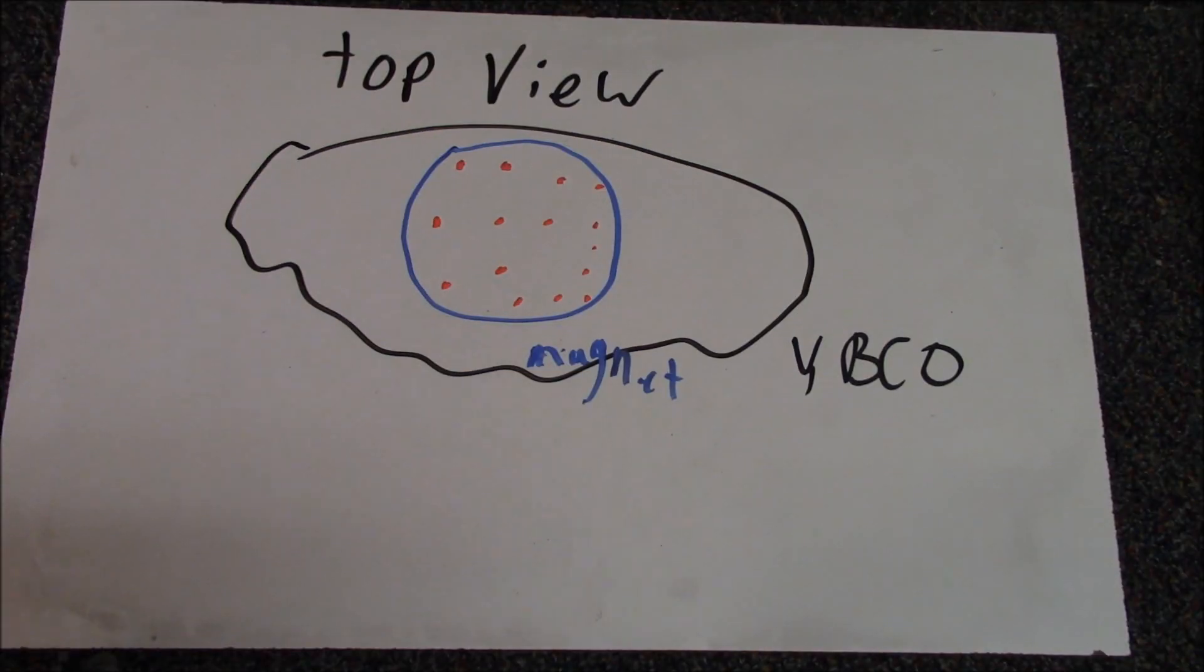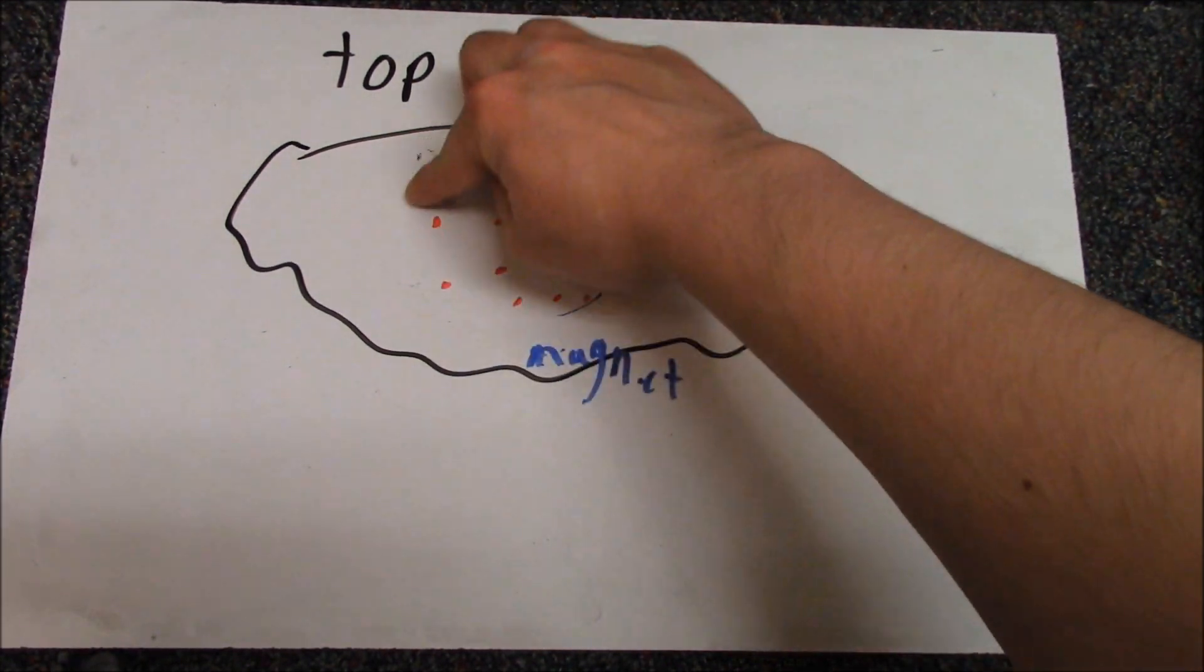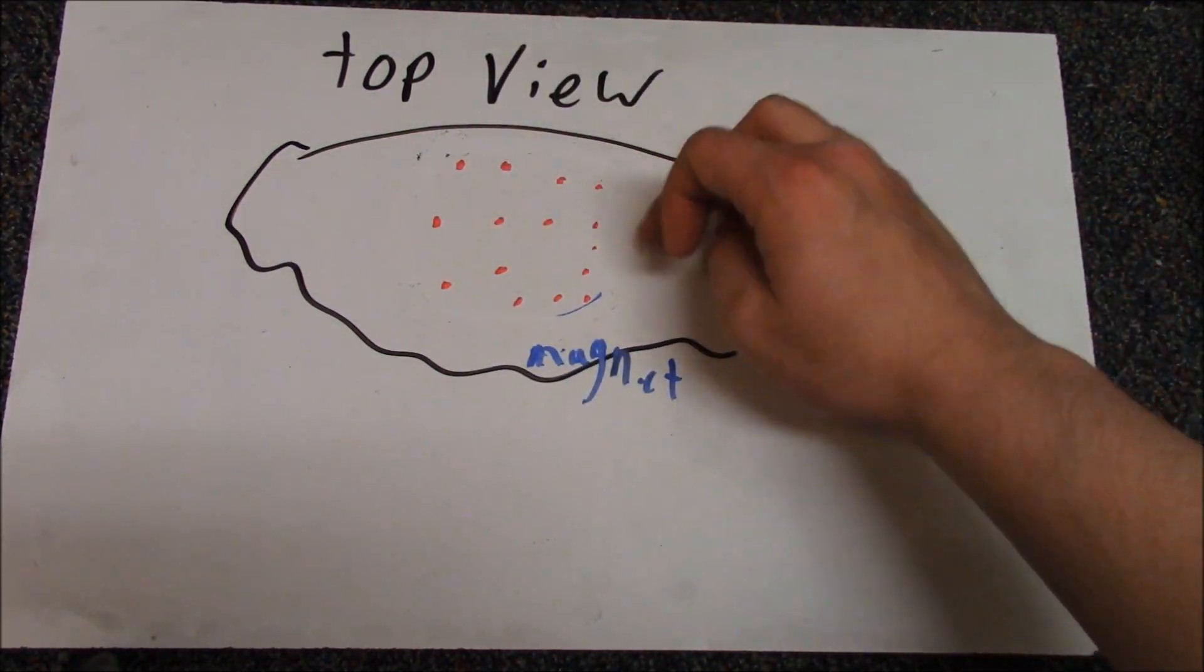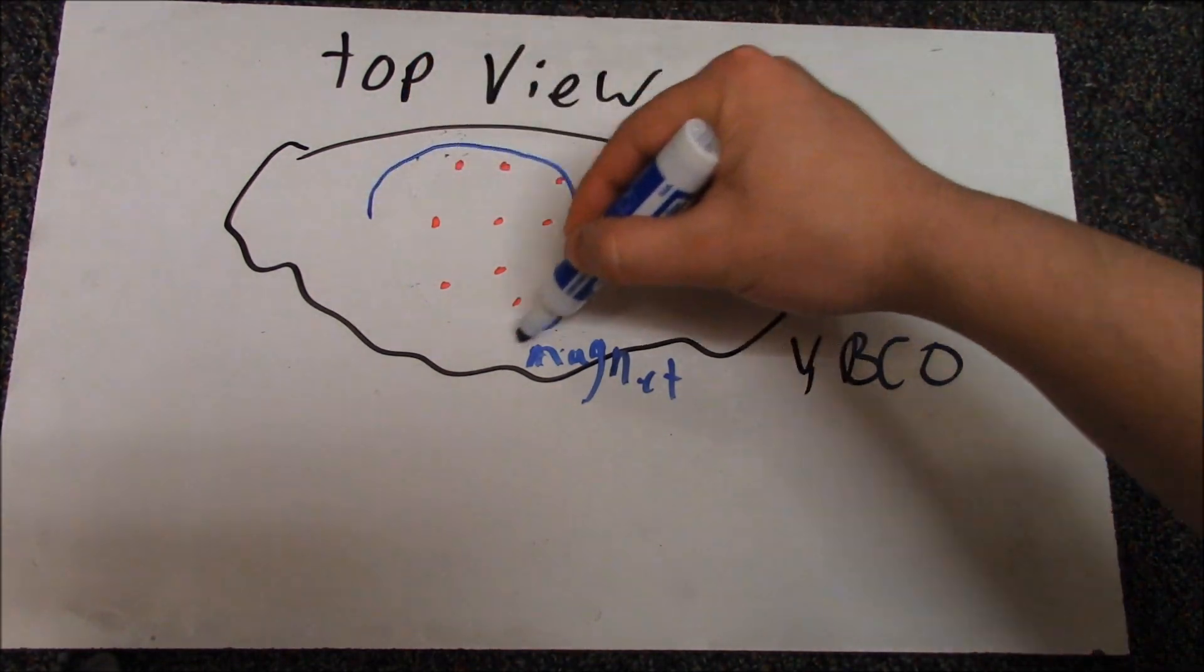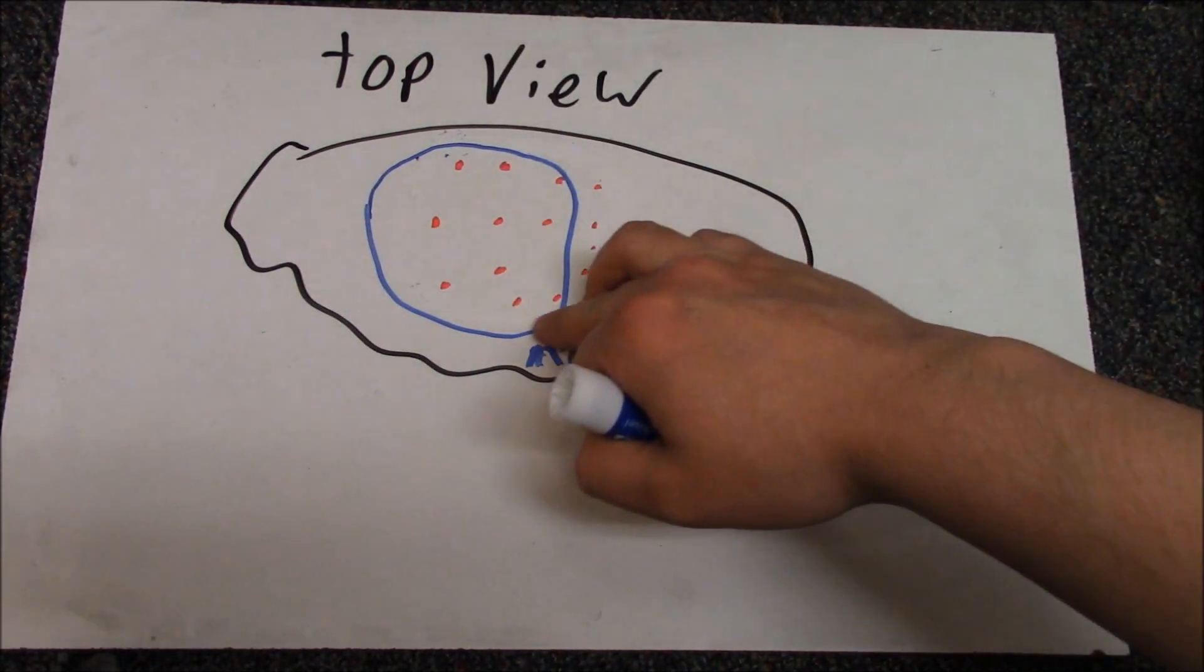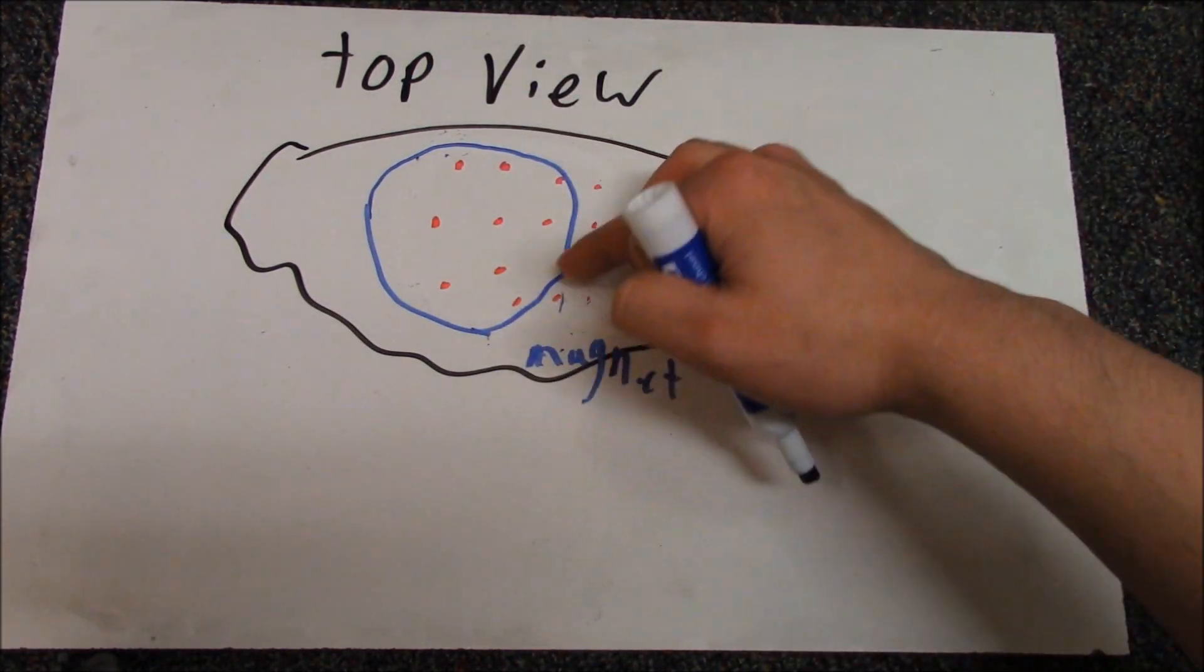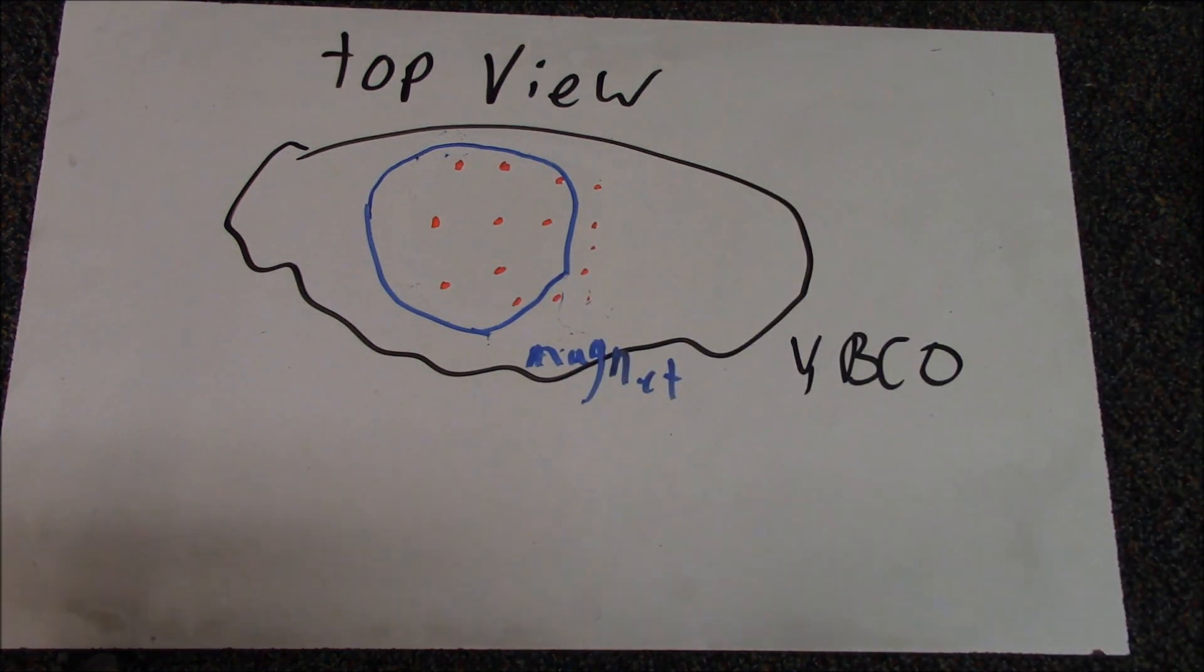To answer this, we switch to a top view, and move the magnet with respect to the YBCO. If the vortices move with the YBCO, the areas with highest vortex density no longer correspond to areas with the highest applied magnetic field, hence the energy would increase.